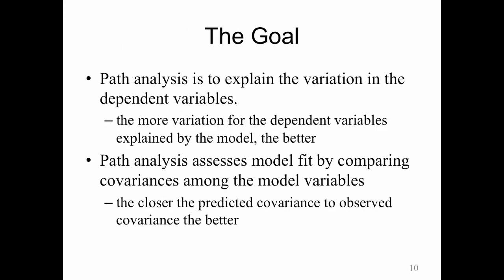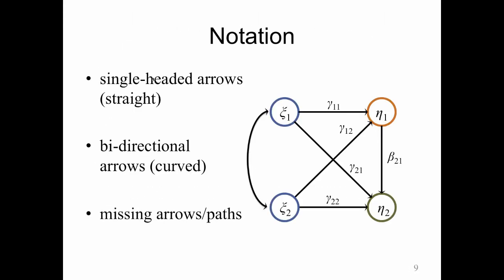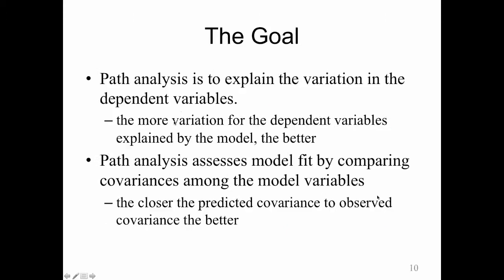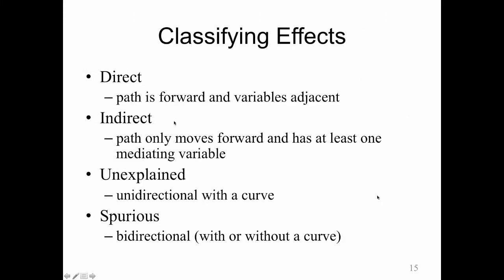So this is the direct effect from psi 1 to eta 2. The direct effect is here. The indirect effect is along gamma 1,1, beta 2,1. So indirect because it has at least one intermediary variable in between. Now, indirect means you are only moving forward. That is part of the rule. So the effect, an indirect effect is only moving forward.